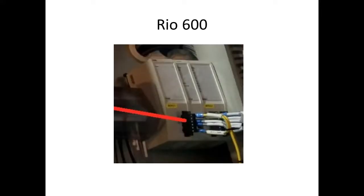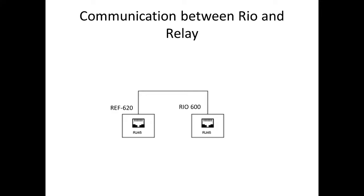This is how the relay will look like. This relay will not have any display. It has one main input card and a DI-DO card. We can add any number of DI-DO series with this slot, just like our TB, we can add this slot. These two relays communicate with an RJ45 cable.